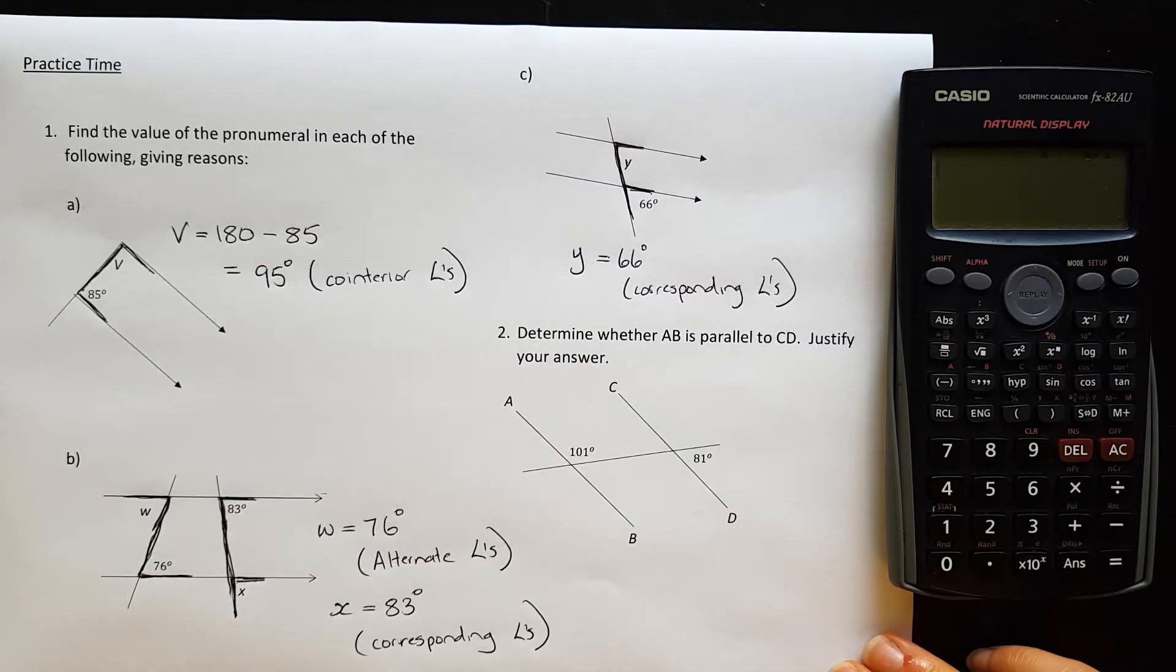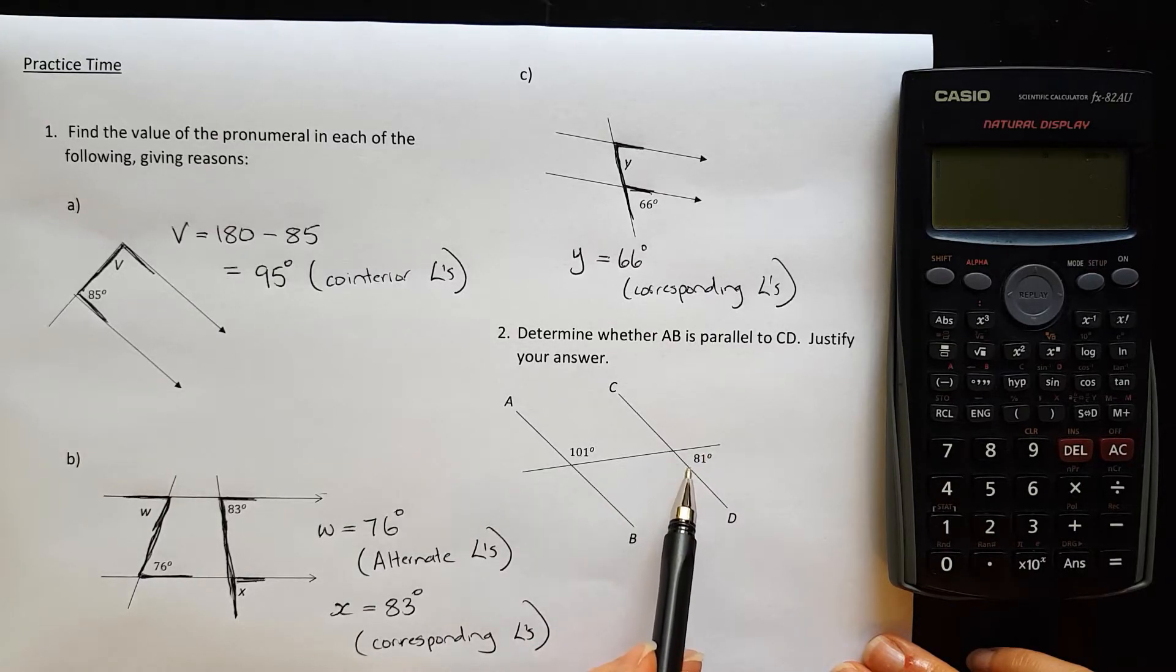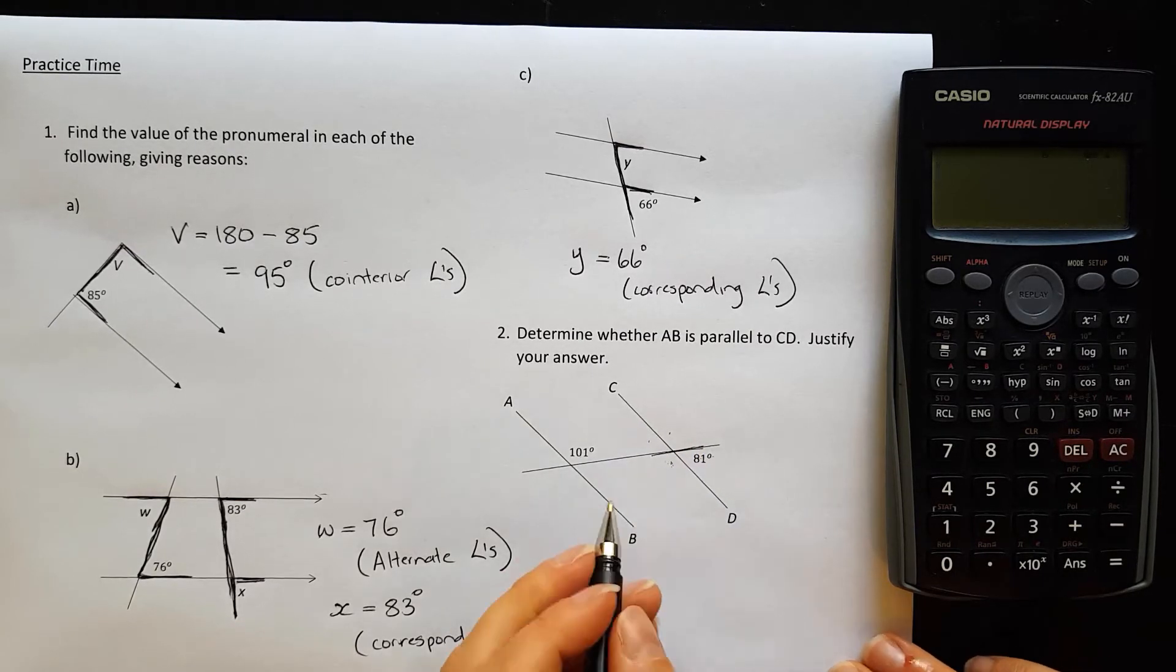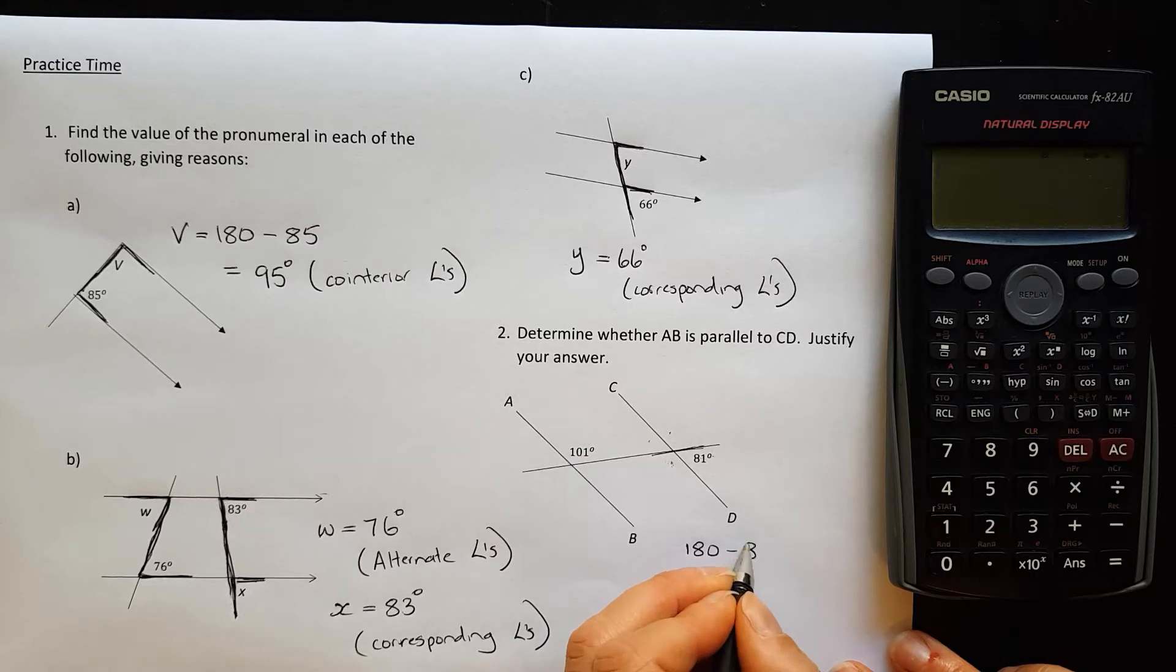And question two. Determine whether AB is parallel to CD. Justify your answer. So let's find out. Let's find out what that angle there is. You could do either. You could find that one. You could find that one. I just need to move them into a shape that works with one of my alternate, corresponding, or co-interior angles. I'm going to try to find this one here. So I'm going to use this straight line. Which means if I do 180 minus the 81, that will give me 99 degrees.